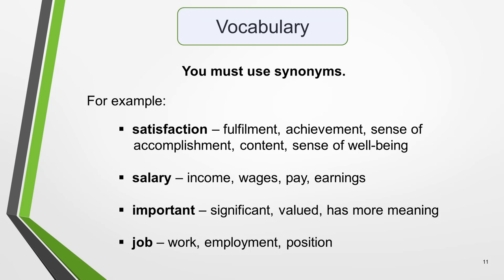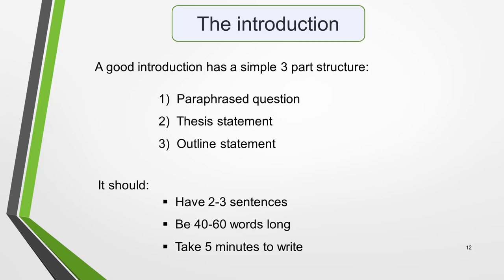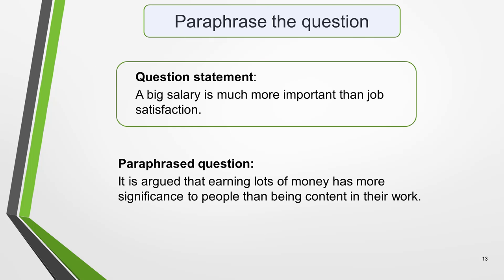With that done we can focus on the first paragraph of the essay — the introduction. A good introduction has a simple three-part structure: paraphrased question, thesis statement, and outline statement. It should have two to three sentences, be 40 to 60 words long, and take five minutes to write. Start your introduction by paraphrasing the statement sentence of the question. Here's the statement: 'A big salary is much more important than job satisfaction.' And this is one way you could paraphrase it — that is, say the same thing in a different way: 'It is argued that earning lots of money has more significance to people than being content in their work.' Note how I've used some of the synonyms I listed, although it's fine to repeat one or two words if you need to. Above all, your language must sound natural.